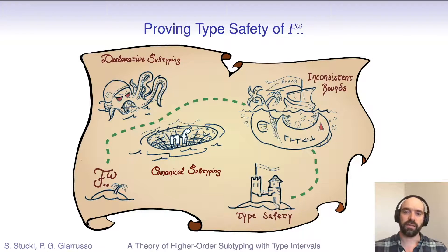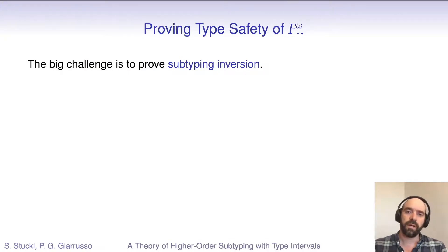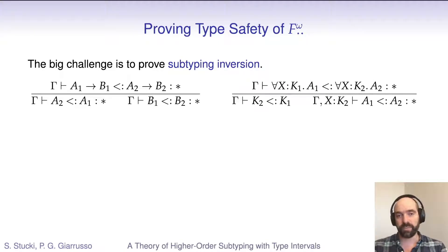Now that we have an idea of how bounded operators are represented in F-omega-int using type intervals, let us take a tour of the main result of our paper, namely the type safety of F-omega-int. And let's have a look at the challenges involved. As usual, for a system that involves subtyping, the main difficulty to proving type safety of F-omega-int is to prove subtyping inversion. If we're given two arrow types that are related, then we should be able to infer that their domains and codomains are also related, and similarly for universal quantifiers.